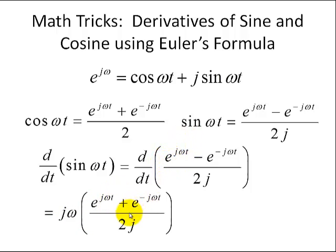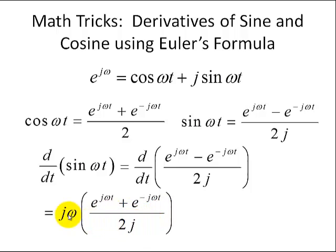In the second term, we have a minus minus, which makes that a plus. So we have e to the minus j omega t divided by 2j. But we see that the j's cancel out, and now we're left with omega cosine omega t.